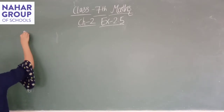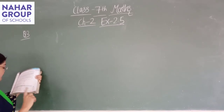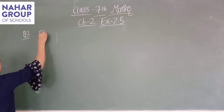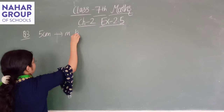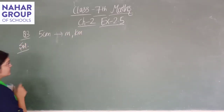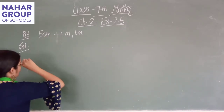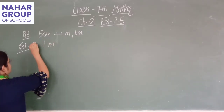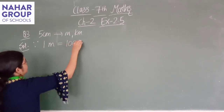Question number 3: express 5 cm in meter and kilometer — means आपको 5 cm को meter और kilometer में express करना है। First, you know that 1 meter equals to 100 cm. So just write: since we know that 1 meter equals to 100 cm.